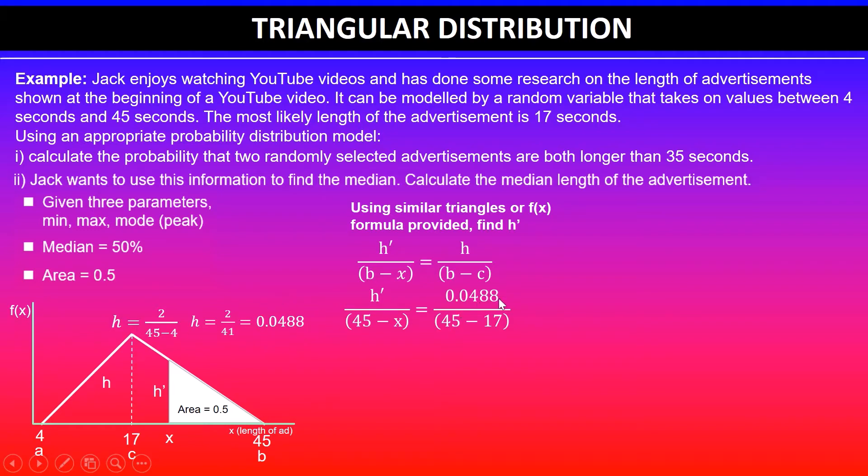So substitute 0.0488 divided by the values b minus c. So b is 45, take away c value which is 17. Once I've done that, this simplifies to h'.